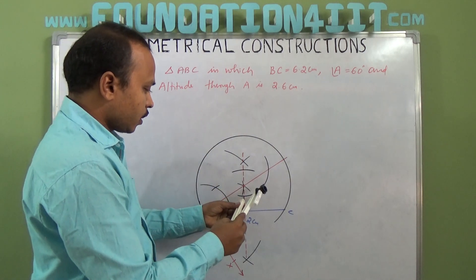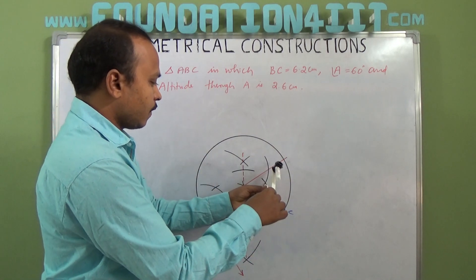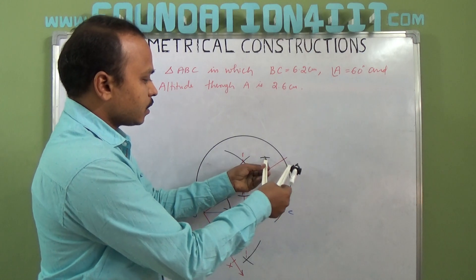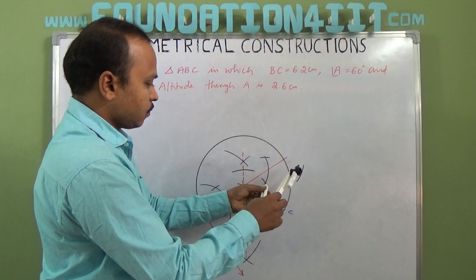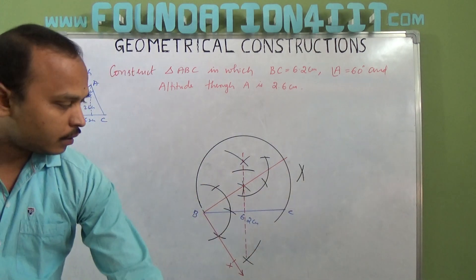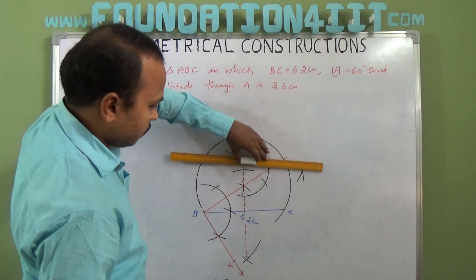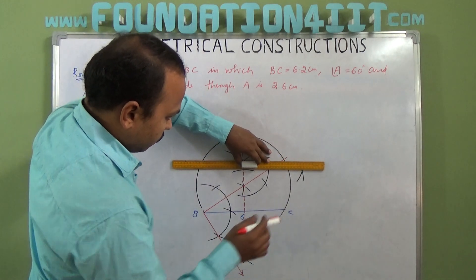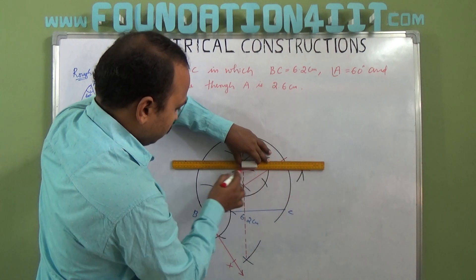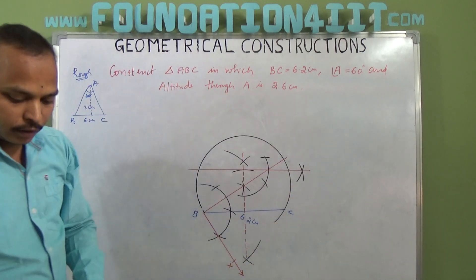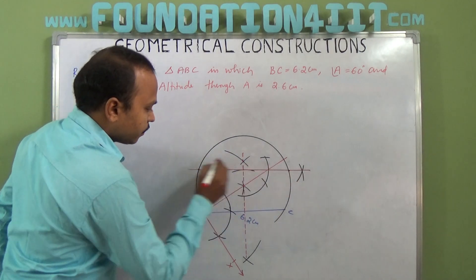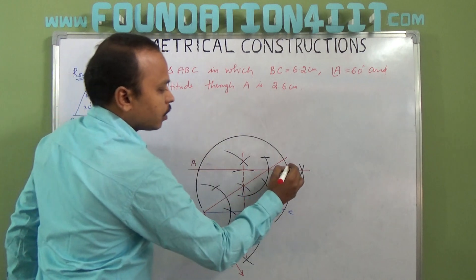For that we need to mark 60 and 120 degrees, then bisect them to get 90 degrees. At this point we need exactly a line parallel to BC. This line is now exactly parallel to BC.